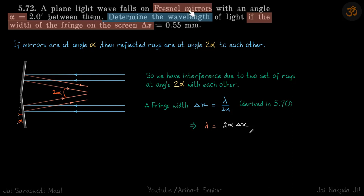A plane light wave falls on Fresnel mirrors with an angle alpha between them. These are the Fresnel mirrors, and the angle between the mirrors is alpha. We need to determine the wavelength if the width of the fringe on the screen, delta x, is given.